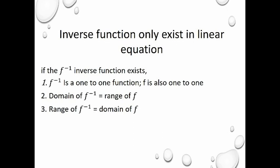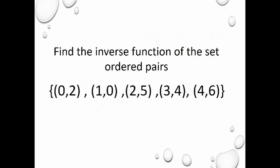The inverse function exists only for one-to-one functions. If the inverse function f⁻¹ exists, then: (1) f is a one-to-one function; (2) the domain of f⁻¹ is the range of f; and (3) the range of f⁻¹ is equal to the domain of f. Literally, we swap them — whatever is the range of the original function becomes the domain of the inverse, and vice versa.